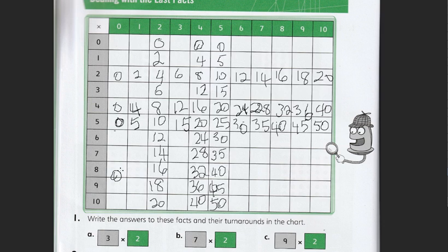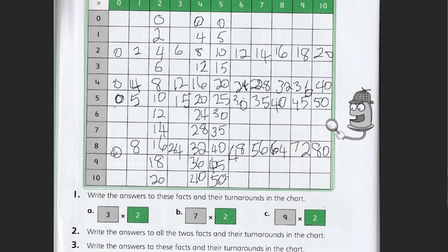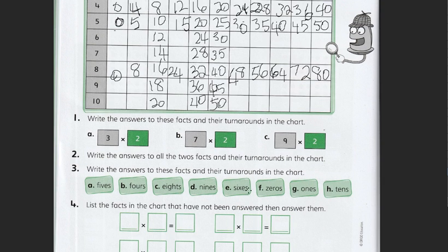There's a zero, eight, sixteen, twenty four, thirty two, forty eight, fifty six. Seven eights are fifty six, eight eights are sixty four, nine eights are seventy two, and eight tens. And you can go through and do the rest of those in your own time. It's got the nines, the sixes, the zeros, ones and tens.